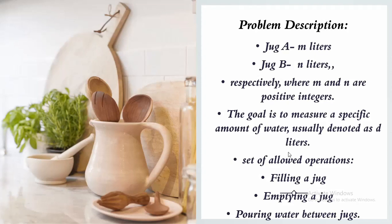And the last one is pouring water between the jugs. We can transfer water from one jug to another, either until the target jug is full or the source jug is empty. So the main task is to find a sequence of these operations that will result in exactly d liters of water in one of the jugs, or determine if it is not possible to measure d liters using the given jugs and operations.